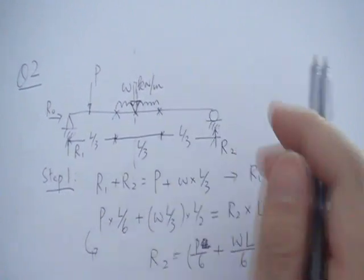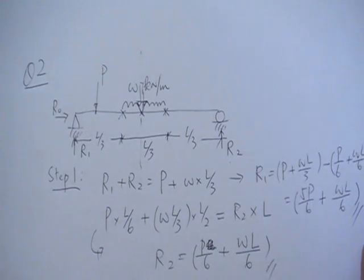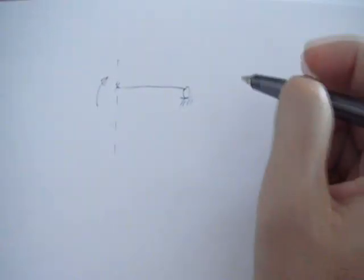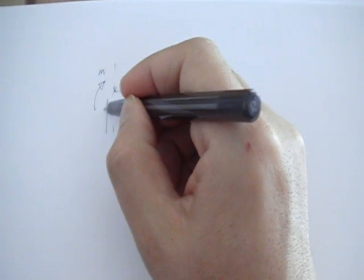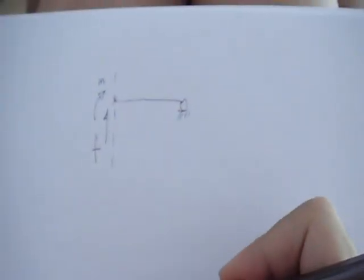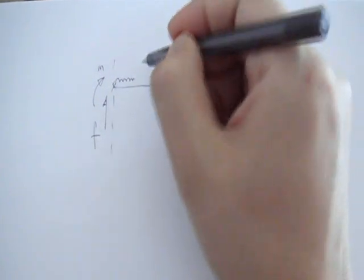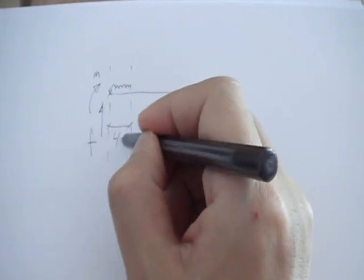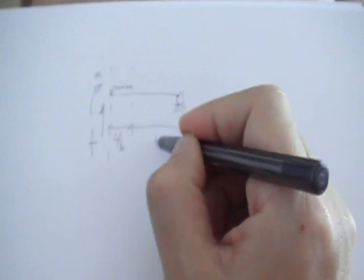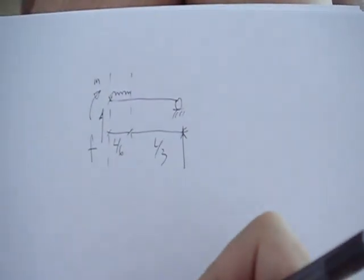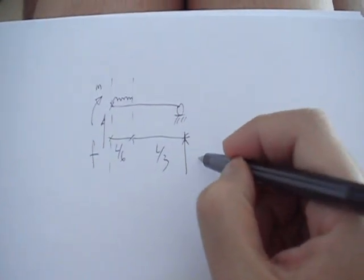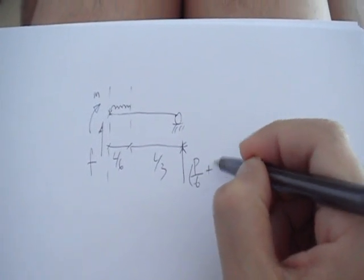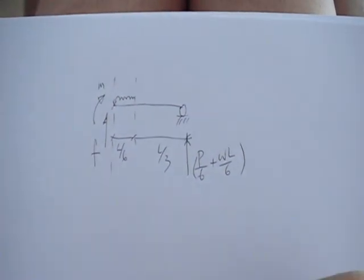I take the right side and then I draw my free body diagram. Positive bending moment or second moment here, and then my positive shear force there. Then my distributed load here - the distance here is L over 6 and the distance there is L over 3. Then that's my reaction, and from step number 1, that reaction is actually P over 6 plus wL over 6.